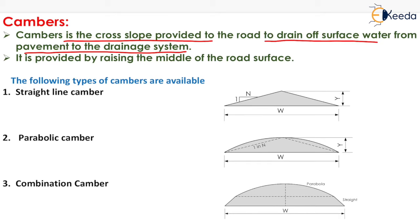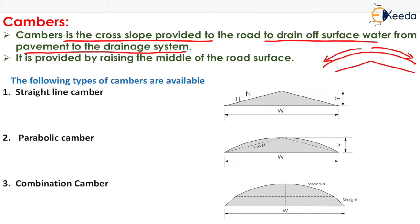You all have seen that the cross section of the road is like this. Now why do we make the cross section of the road just like a parabola? To drain off the water which is coming over the surface of the pavement. That's why we generally make the top surface of the pavement just like a parabola or just like a straight triangle shape like this.